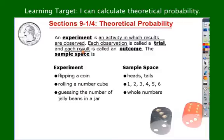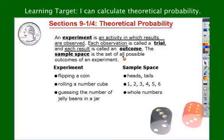The sample space is a set of all possible outcomes of an experiment. Just like if you think of space as all the possible things that could exist in the universe, the sample space is everything that could happen in an experiment. Make sure you get those written down — you can pause the video here if you need to.